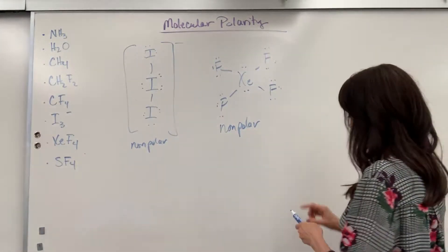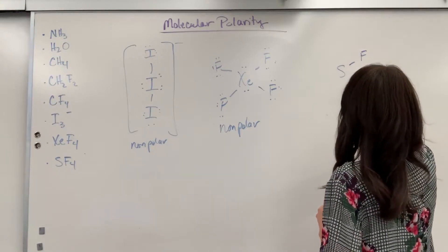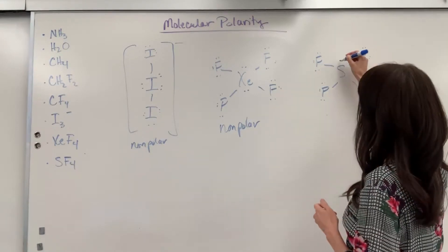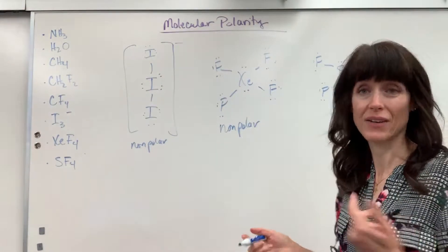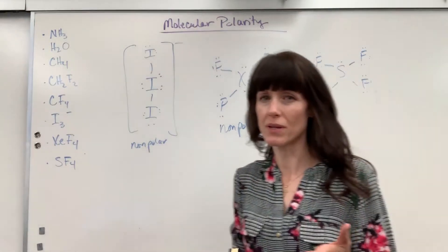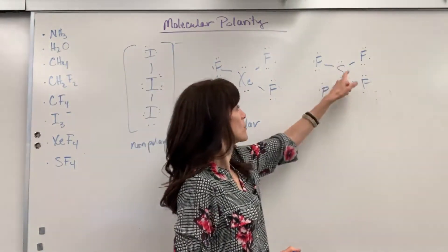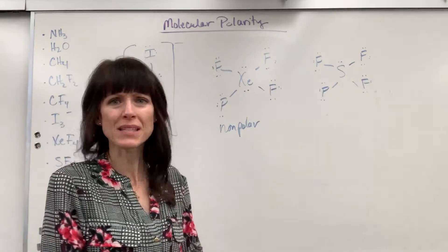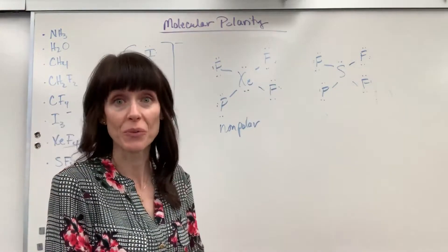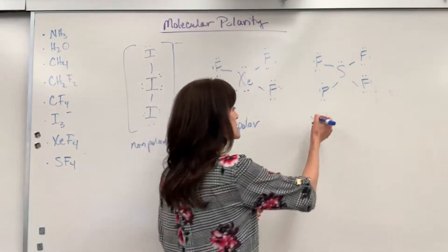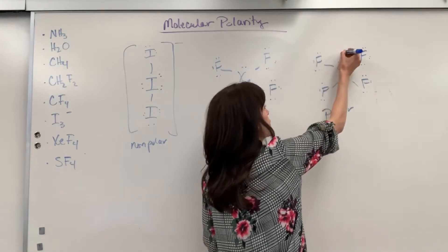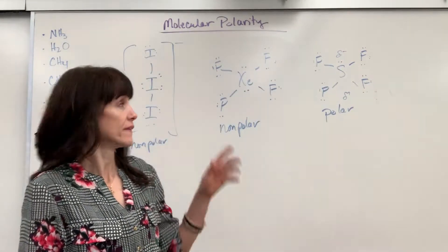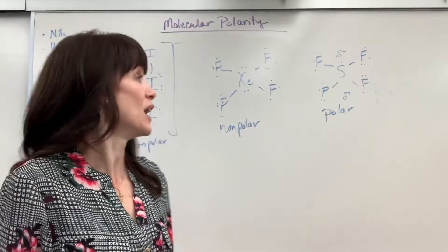Let's do sulfur tetrafluoride, SF4. Sulfur has six valence electrons and shares an electron with each of the four fluorine atoms, leaving one lone pair. Let's count electron domains: one, two, three, four, five — so the electron geometry is trigonal bipyramidal, with four bonds and one lone pair. You'll recall that's the seesaw shape. Asking about polarity: one lone pair — that lone pair automatically makes it a polar molecule. That partial negative goes next to the lone pair and everything else is the partial positive. It's not one of my exceptions, so it is polar.